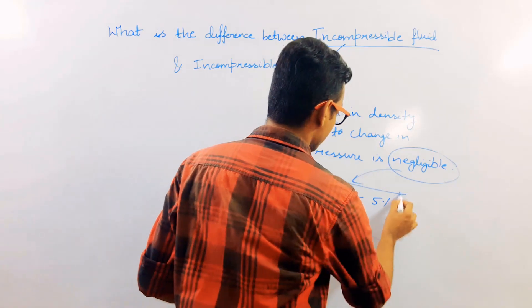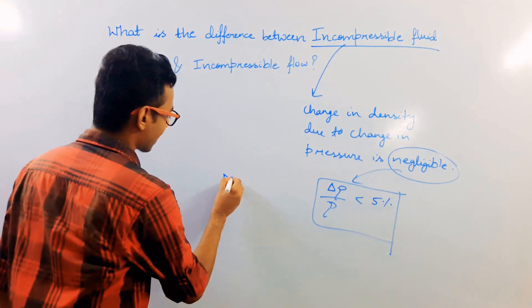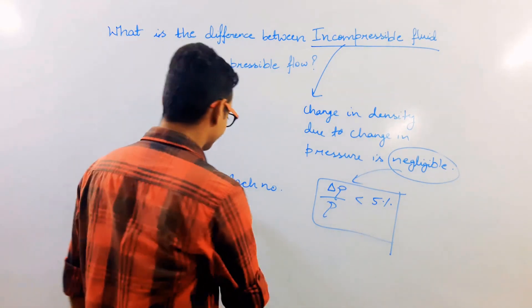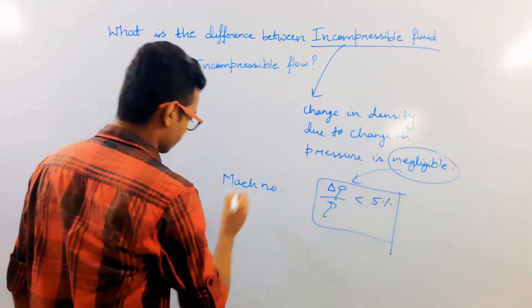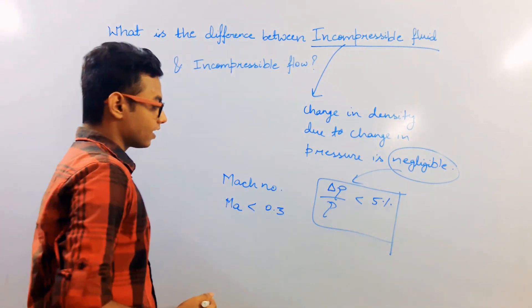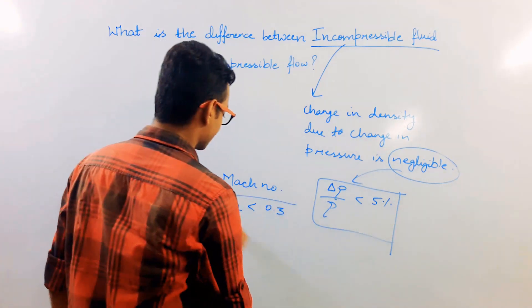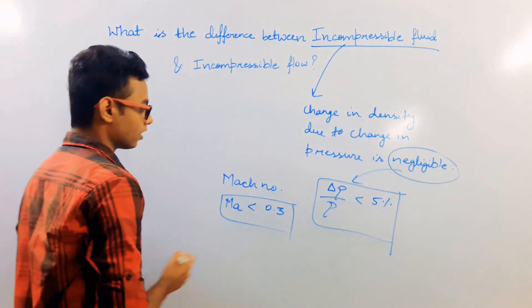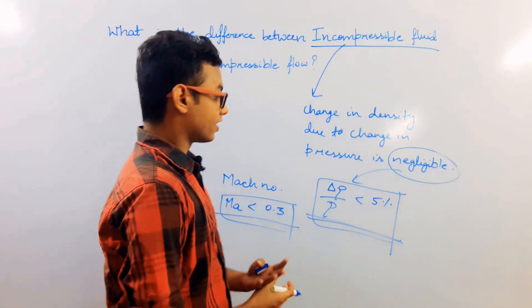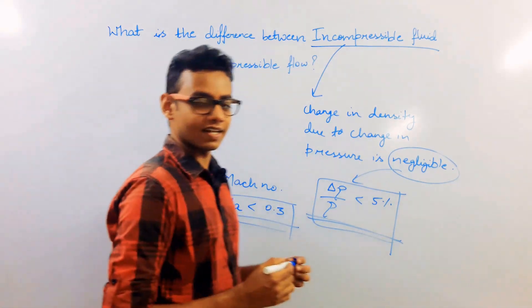This can also be said in a different way by relating it with the Mach number. When the Mach number of the fluid and the Mach number of the flow is less than 0.3, the compressibility effect in the fluid is negligible, or we say that the fluid is incompressible. But how are these two related, since both are denoting the same thing?